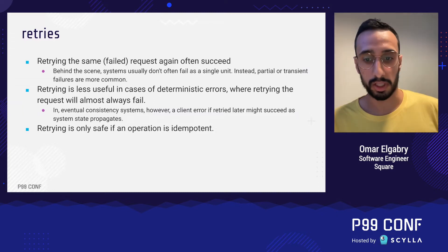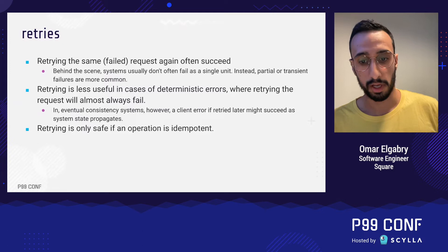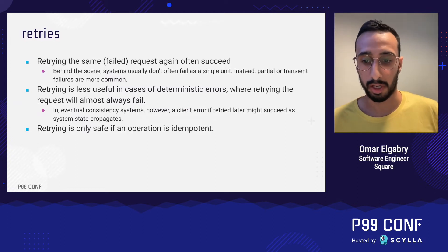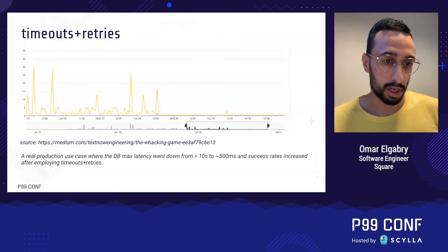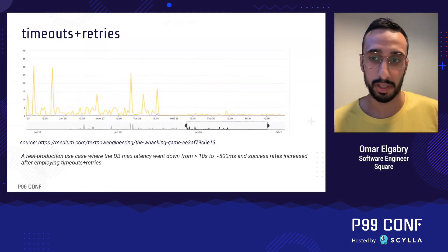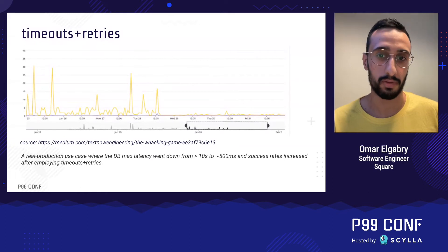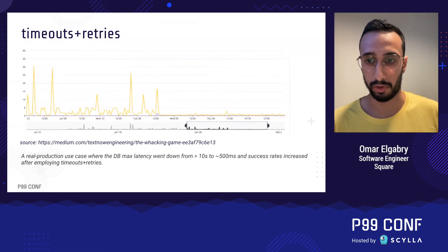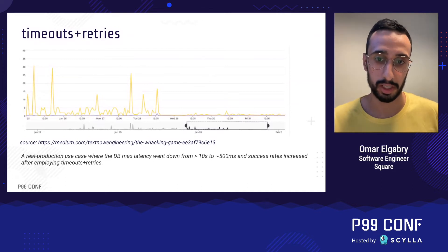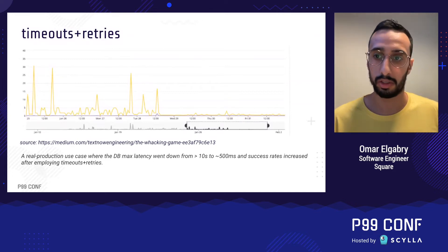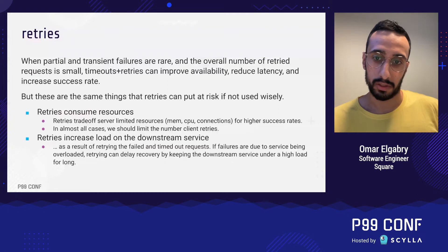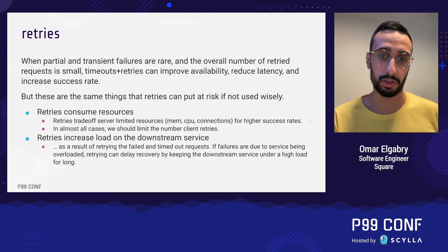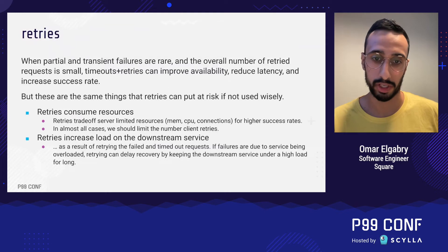Retrying is only safe if an operation is idempotent, because a timeout or failure does not necessarily mean the operation hasn't been executed. This is a real production use case where database maximum latency went down from 10 seconds to 500 milliseconds after employing timeouts and retries, which also increased the success rate. When partial and transient failures are rare and the overall number of retried requests is small, timeout and retries can improve availability, reduce latency, and increase the success rate.